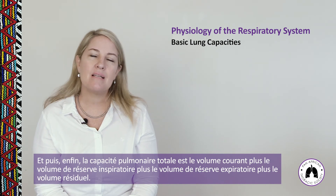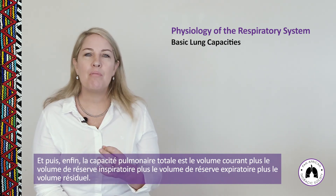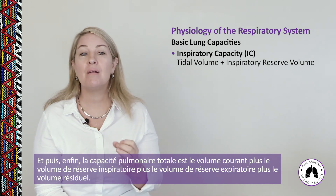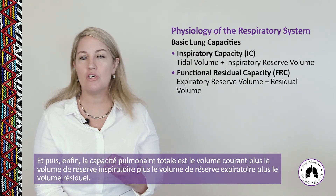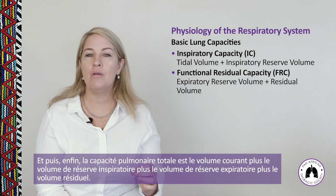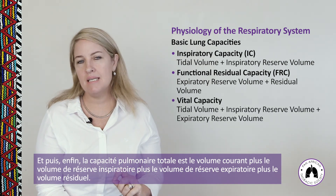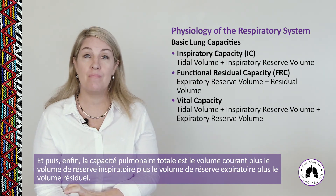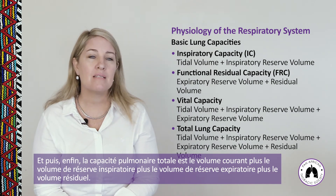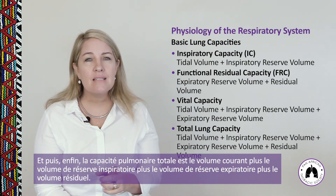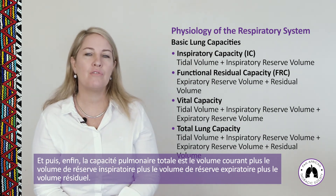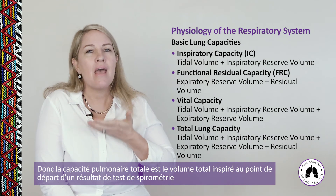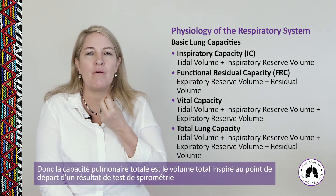Let's look at the basic lung capacities. A capacity is made up of one or more lung volumes. The inspiratory capacity is the tidal volume plus the inspiratory reserve volume. The functional residual capacity is the expiratory reserve volume plus the residual volume. The vital capacity is the tidal volume plus the inspiratory reserve volume plus the expiratory reserve volume. The total lung capacity is all four volumes combined, representing the total volume of air at the starting point of a spirometry test.